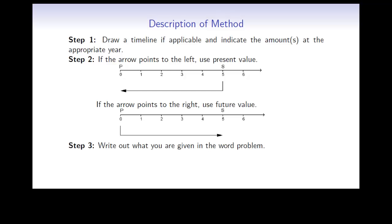Step 3: Write out what you are given in the word problem — that means write what R equals, the periodic rate, and what N equals, the total number of periods. Step 4: Choose the correct formula and solve for the unknown variable.